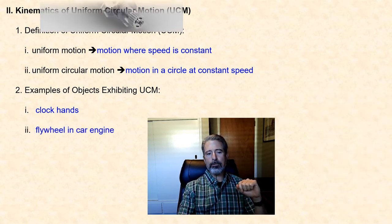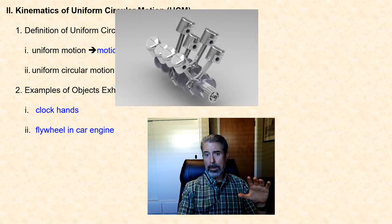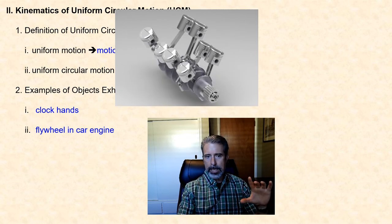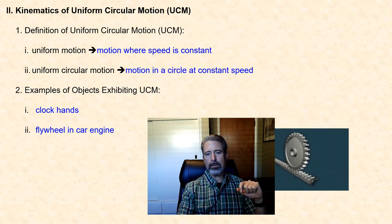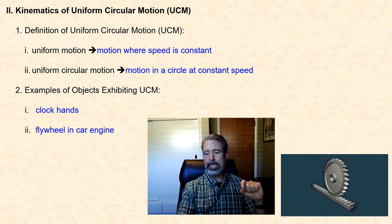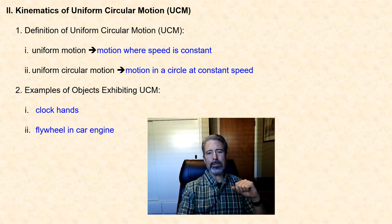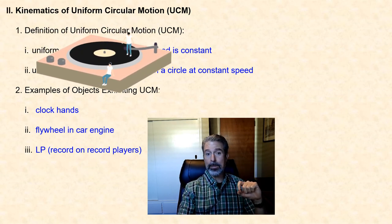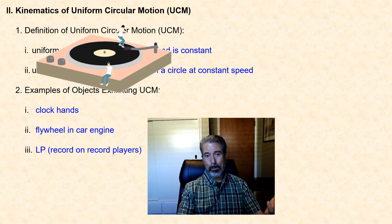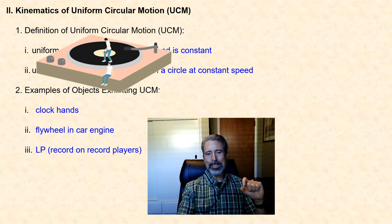What about the flywheel in the internal combustion engine of a car? The internal combustion engine transforms the vibrational back-and-forth motion of the pistons into nearly uniform circular motion of the flywheel. What about the gears in your transmission physically linked to the flywheel? And there's the LP — a record spinning at about 33 revolutions per minute — which is an example of an object that exhibits nearly uniform circular motion.